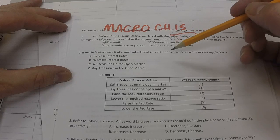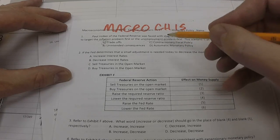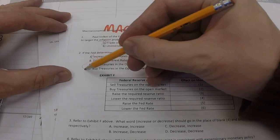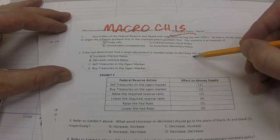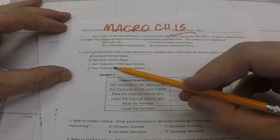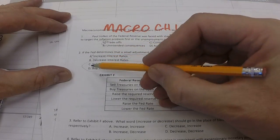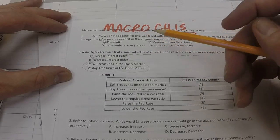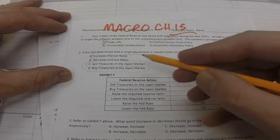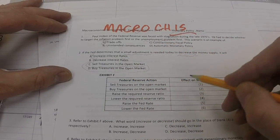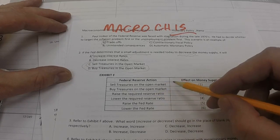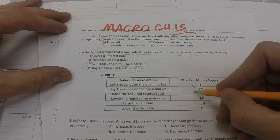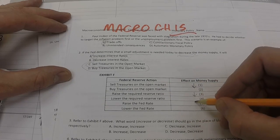Question two. If the Fed determines that a small adjustment is needed today to decrease the money supply, then what we're looking for here is a small adjustment. So interest rates are out. Open market transactions are the right one for small adjustments. And if we want to decrease the money supply, then what we want to do is sell treasuries in the open market because selling treasuries allow the money to come off the money supply or off the street and into the Federal Reserve. In fact, selling treasuries on the open market is something that's going to decrease the money supply.